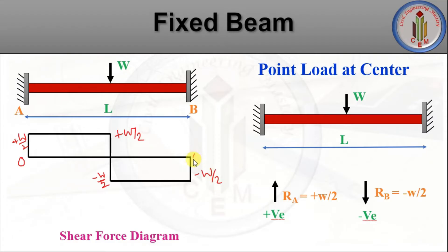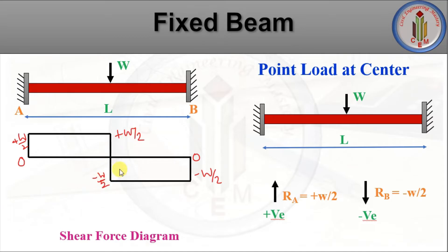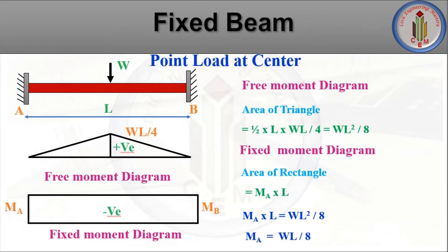At point A, the reaction RA is +W/2, and at point B, the reaction RB is −W/2. At the midpoint, they cancel out and become 0. We note that the left side is positive and the right side is negative.